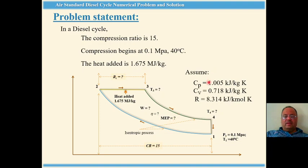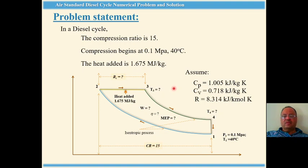We are also given the specific heat at constant pressure Cp, specific heat at constant volume Cv, the universal gas constant R, and gamma which is Cp upon Cv equals 1.4. We assume the working medium is air.